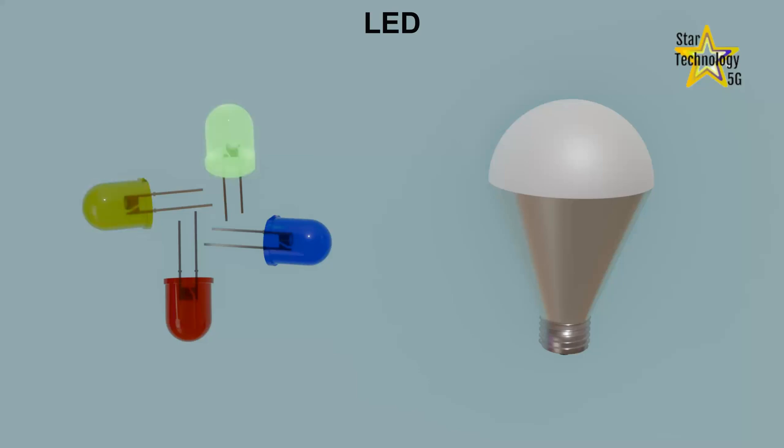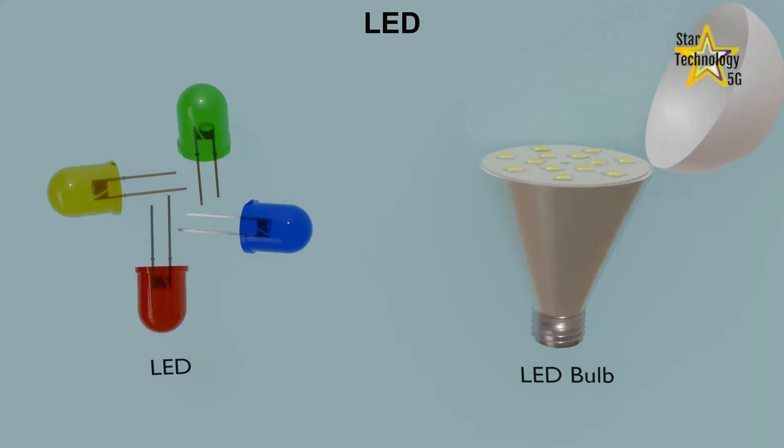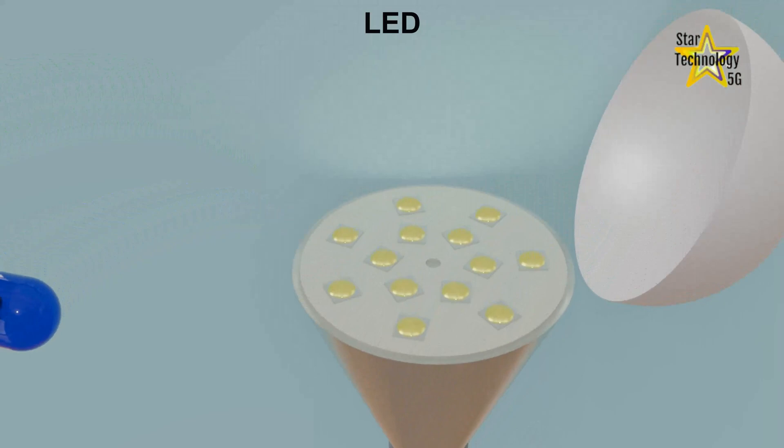Light-emitting diodes, LEDs, are the most widely used semiconductor diodes among all the different types of semiconductor diodes available today. Light-emitting diodes emit either visible light or invisible infrared light when forward biased.